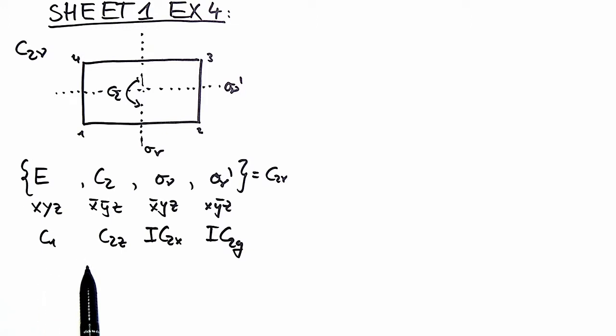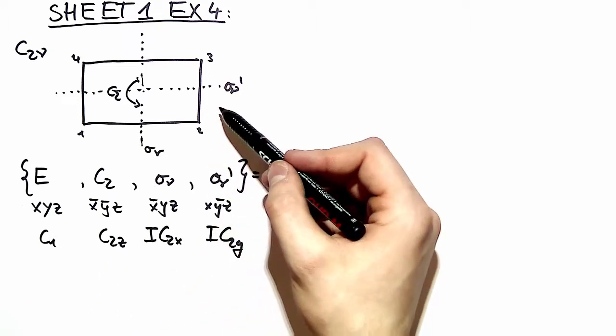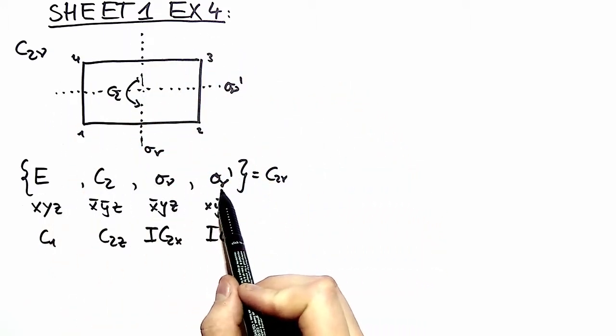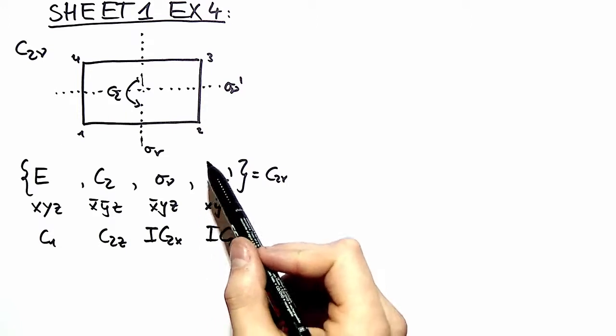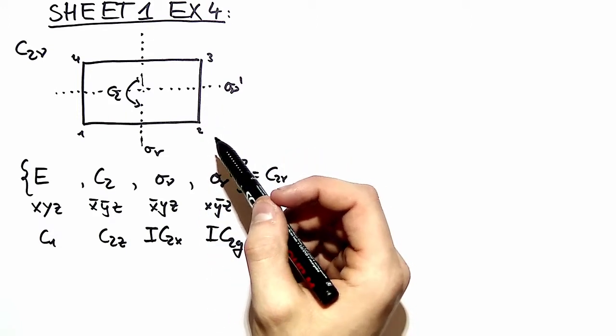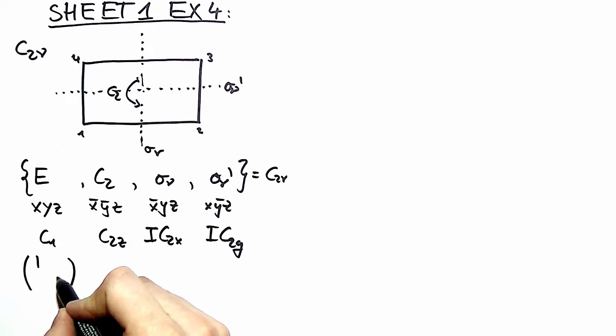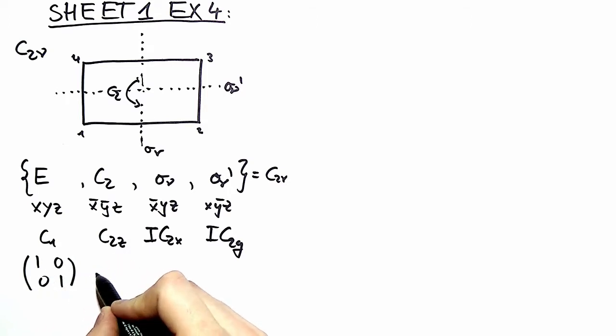When looking for matrices to transform any coordinate in our plane corresponding to the symmetry operations, of course we are invited to take the Cartesian coordinate system again. So for the identity matrix both X and Y coordinates are left invariant.